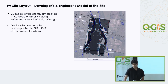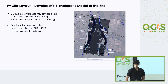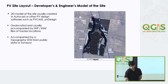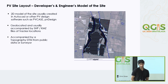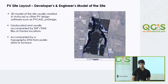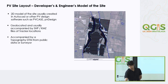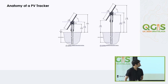These files are always geolocated and they're accompanied by shapefiles or KMCs showing the locations of the trackers. They're also usually accompanied by a topography DTM or public data, which could be surveyed by a surveyor or you can fly a LiDAR drone to get topographic data and get a raster from that — usually a GeoTIFF.